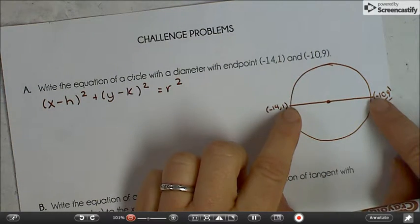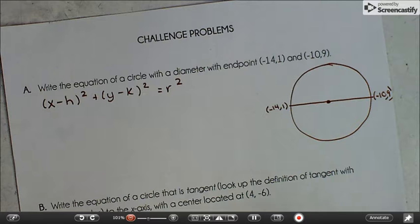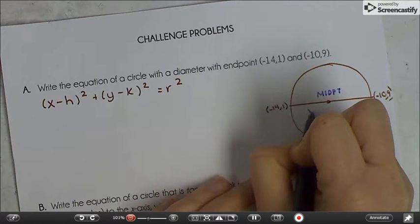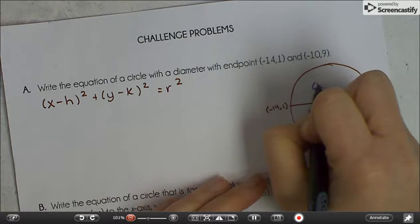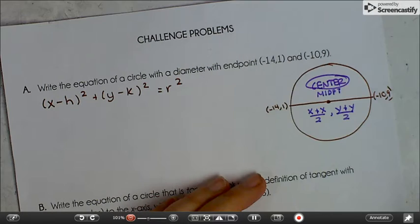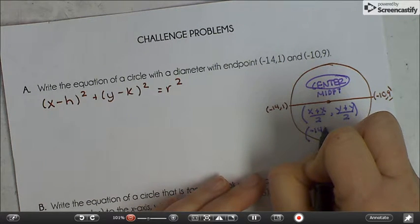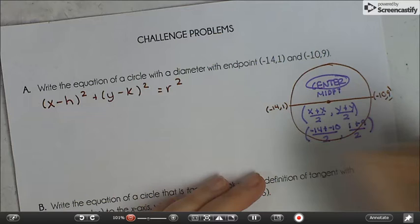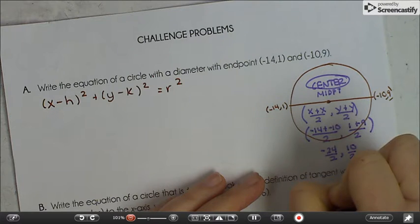If this is a segment, and this is in the middle, what formula would you use to figure that out? Well, the center is the midpoint. So we would want to use the midpoint formula. x plus x over 2, y plus y over 2. That'll give us the center of the circle. Okay, it's a coordinate. So here we have negative 14 plus negative 10 over 2 and 1 plus 9 over 2. So negative 24 over 2 and 10 over 2, which means the center of this circle is negative 12, 5.